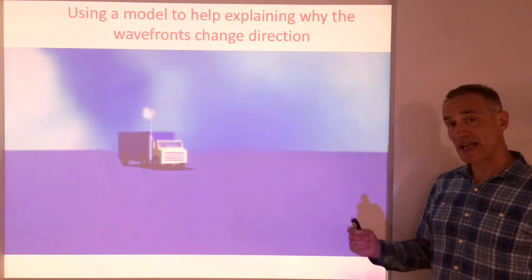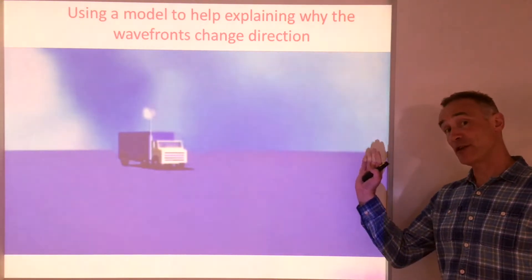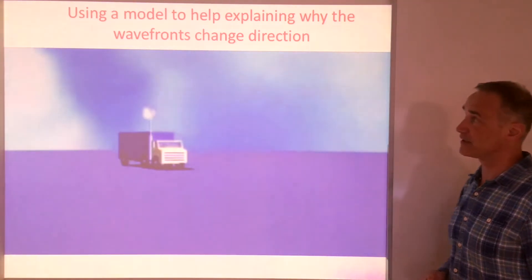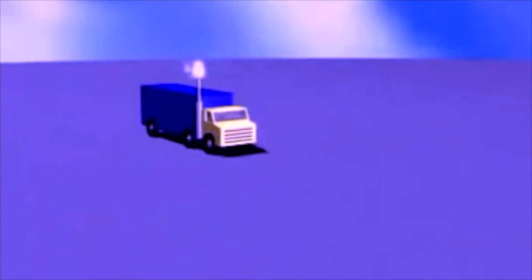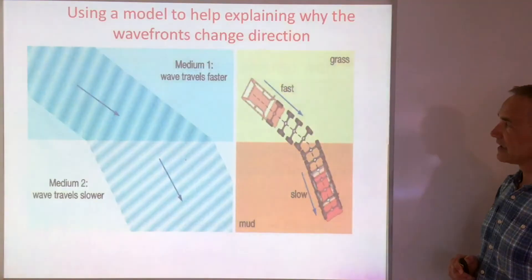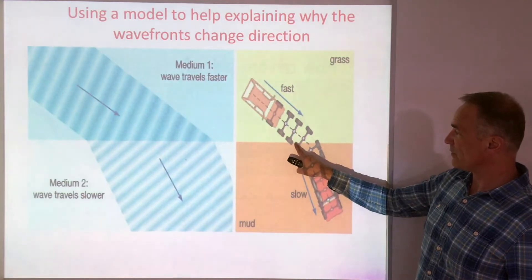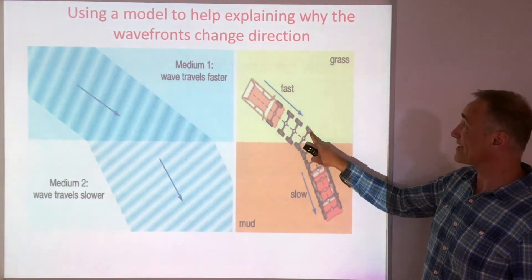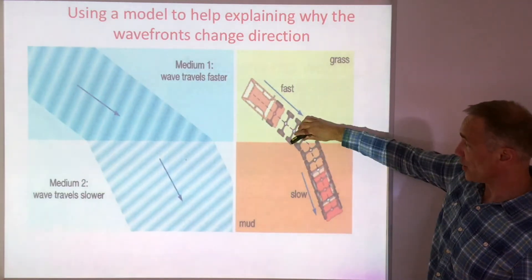We can also use models to explain why wave fronts change direction when they go from one medium into another — when they speed up or slow down. A classic example is the truck animation. The truck first travels on concrete and then hits sand. When the first wheel hits the sand it slows down, but the other wheel is still travelling faster on the concrete and therefore travels further. So the whole lorry bends into a new direction. You can see that as the wheels hit the sand, the wheel that enters slows down and doesn't travel as far, while the wheel still in the grass is travelling faster, so the whole thing bends around.